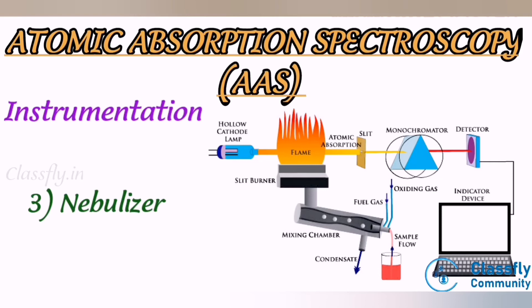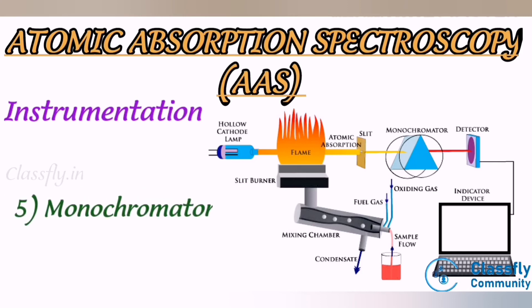Third, nebulizer: it sucks up a liquid sample at a controlled rate, creates a fine aerosol spray for introduction to the flame, and mixes the aerosol with fuel and oxidant for introduction to the flame. Fourth, detector: a light selected by the monochromator is directed onto a detector — typically a photomultiplier tube — which converts the light signal into an electrical signal proportional to light intensity, processed by a signal amplifier. Fifth, monochromator: used to select the specific wavelength of light absorbed by the sample and to exclude other wavelengths.